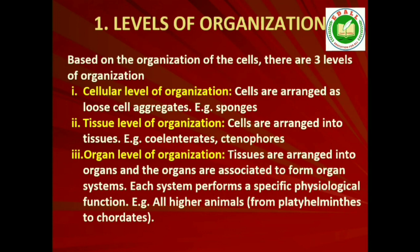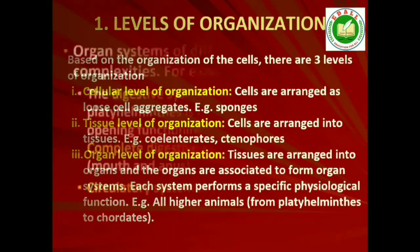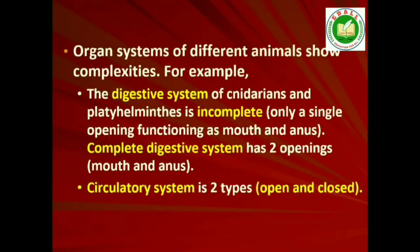In coelenterates, the arrangement of cells is more complex. Here the cells performing the same function are arranged into tissues, hence it is called tissue level of organization. A still higher level, i.e., organ level, is exhibited by members of Platyhelminthes and other higher phyla, where tissues are grouped together to form organs, each specialized for a particular function. In animals like annelids, arthropods, molluscs, echinoderms and chordates, organs have associated to form functional systems, each concerned with a specific physiological function. This pattern is called organ system level of organization.